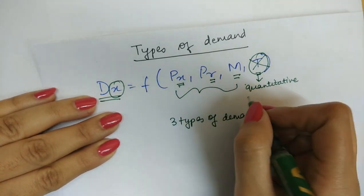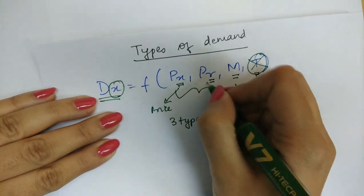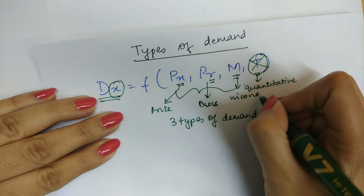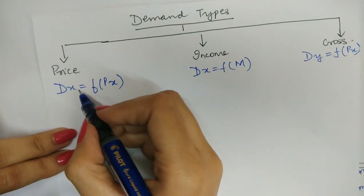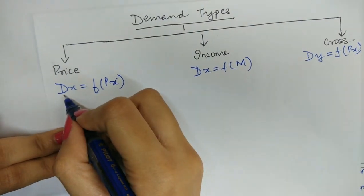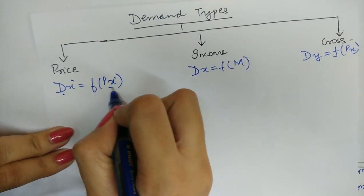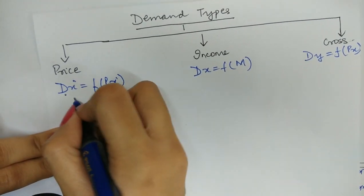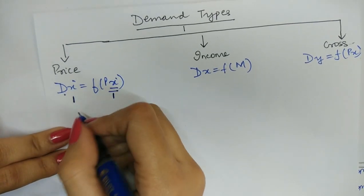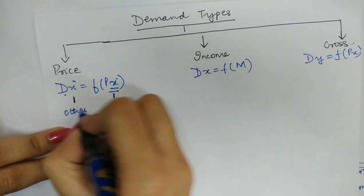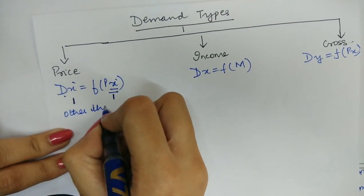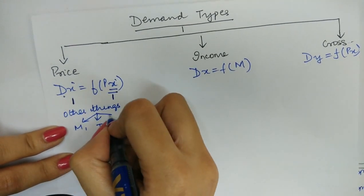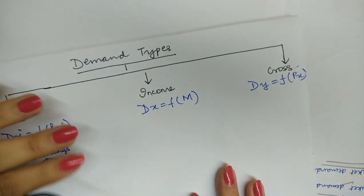These three types are related to those determinants: price demand, cross demand (related to the price of the related good), and income demand. Price demand tells you the relationship between the price of a commodity and the demand for that commodity. For commodity X, it tells you the relationship between the price of commodity X and the demand for commodity X, with other things kept constant — that is, the income of the consumer, the taste and preferences, and the price of related goods.